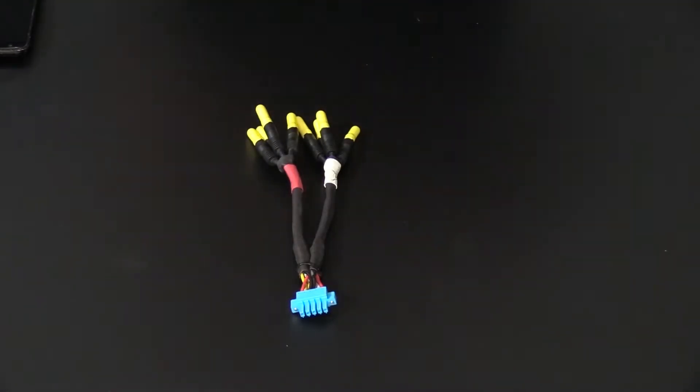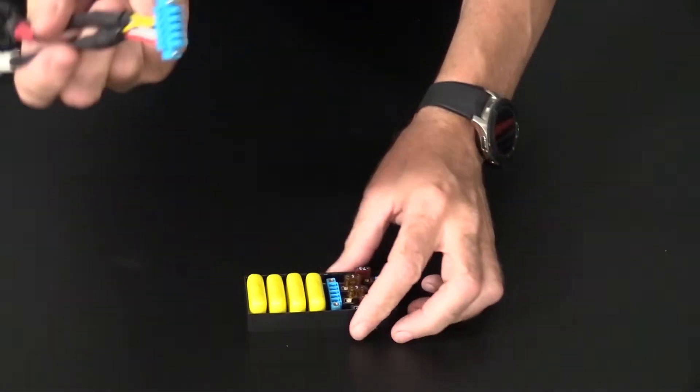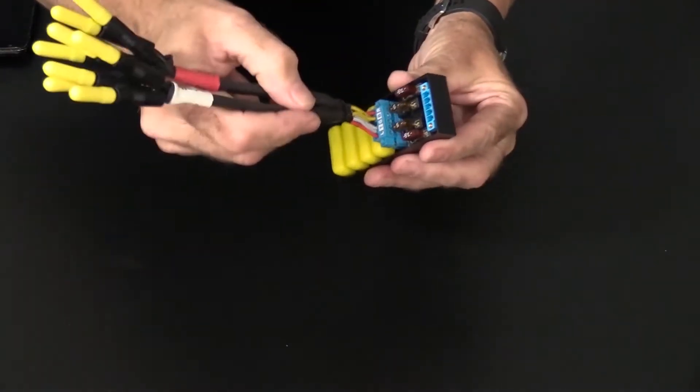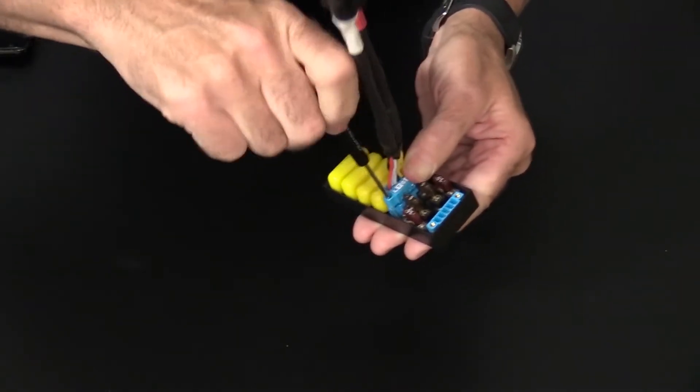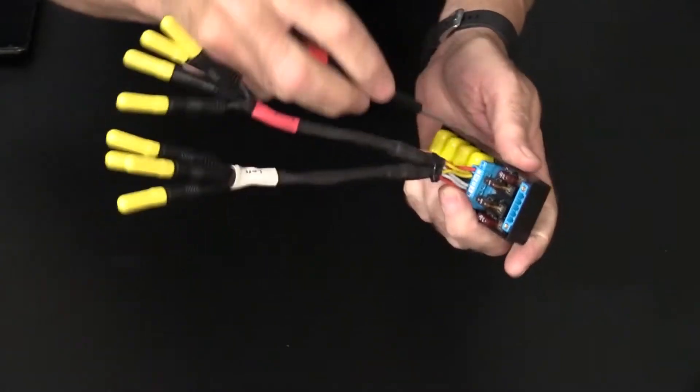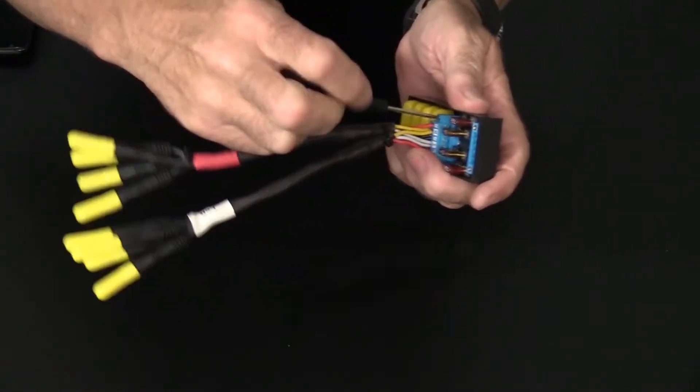The connector can only insert in one direction, so don't be worried about not connecting it right. After inserting the connector, take your small flat tip screwdriver and secure it to the block. Additional wire harnesses are available; if you don't see what you need, please contact us.